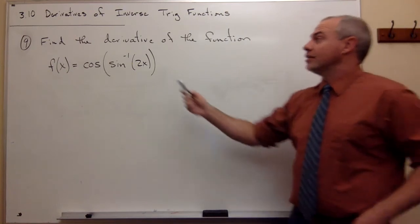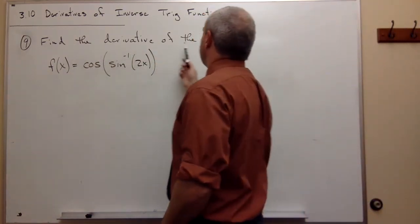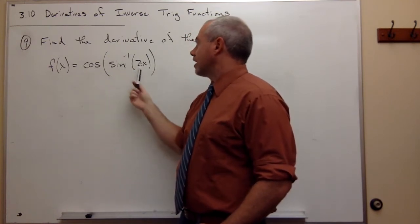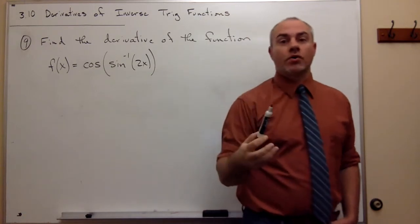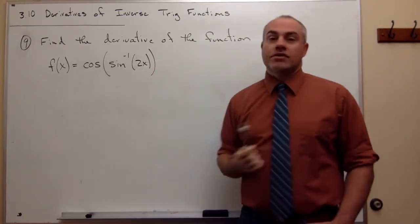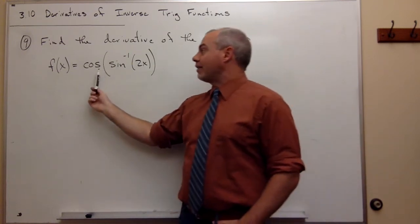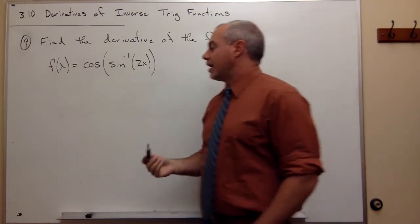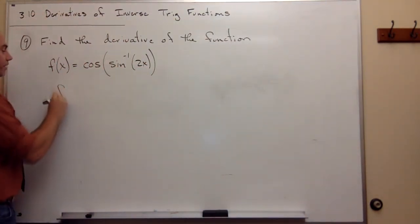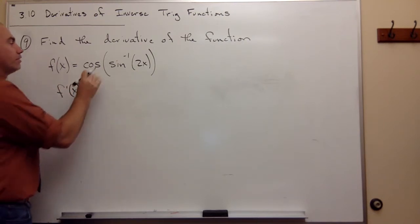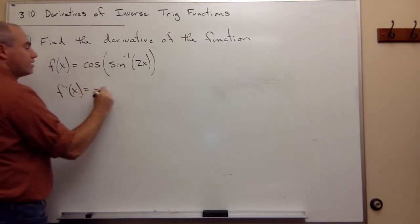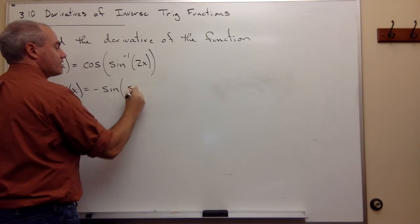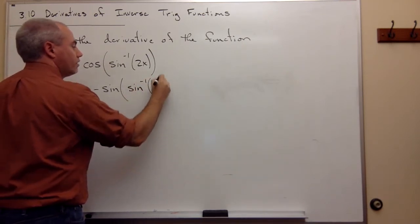Now let's look at problem number nine. We want to find the derivative of f(x) = cosine of sine inverse of 2x. So we've got cosine of something — this is a chain rule problem where the outside function is cosine. Taking the derivative of cosine of something, we get that f prime of x is equal to negative sine of whatever is inside, which in this case is sine inverse of 2x.